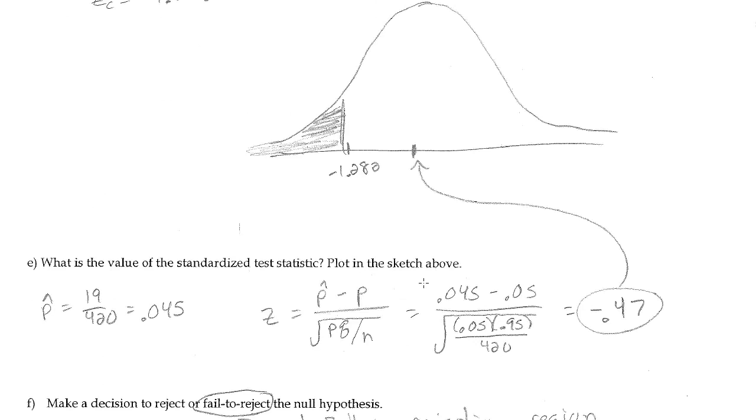And then the next thing, by hand, would be we calculate our standardized test statistic. So we have the sample proportion minus the population proportion, and then we divide by the standard error of the binomial distribution. And that is pq over n, square root of pq over n.